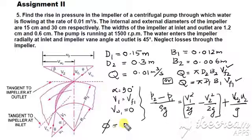From the given information, of course you can find out u1 and u2. u1 is equal to π d1 n by 60, and u2 is equal to π d2 n by 60.